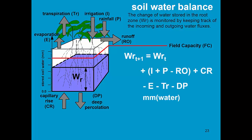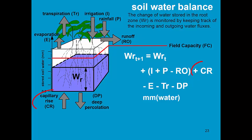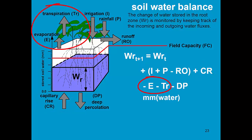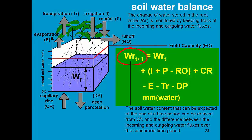The water content in the root zone at the next day is equal to the water content at the previous day, plus the amount of water added by irrigation and rainfall, minus water lost by runoff, plus water that moves up from the groundwater table to the root zone by capillary rise, minus the amount of water lost by evaporation, transpiration, and deep percolation. The soil water content expected at the end of the day is derived from the previous day's water content and all incoming and outgoing fluxes over that time period.